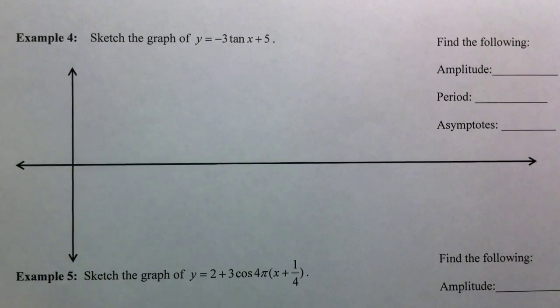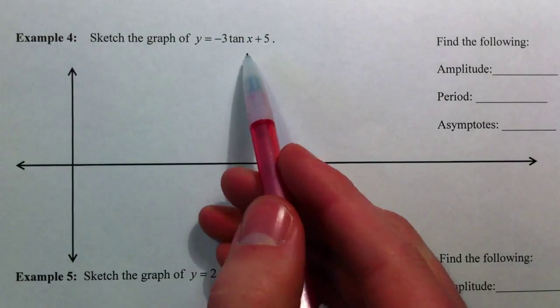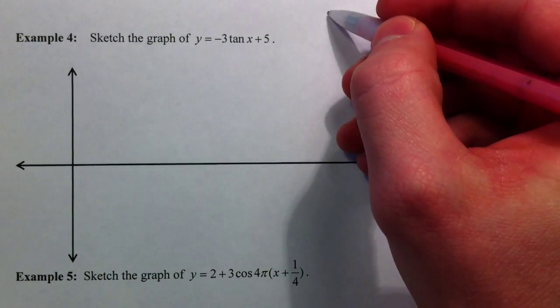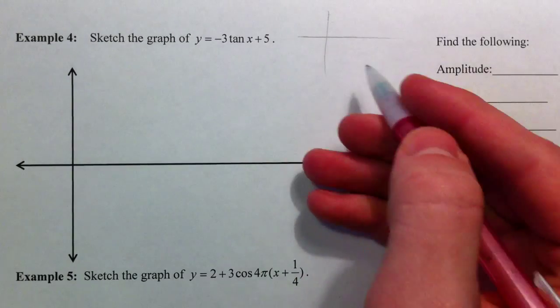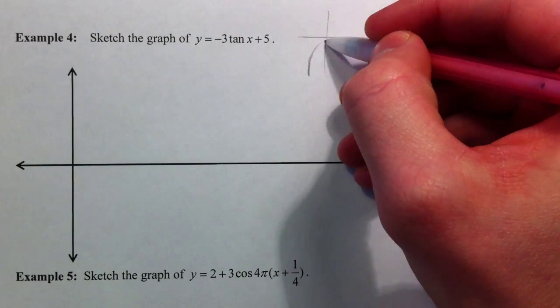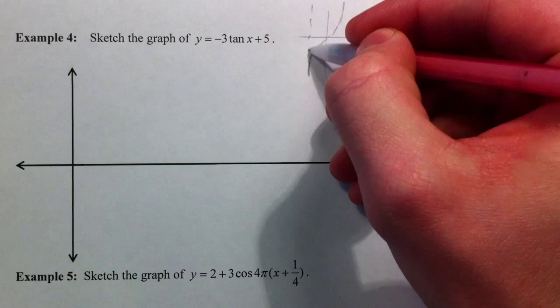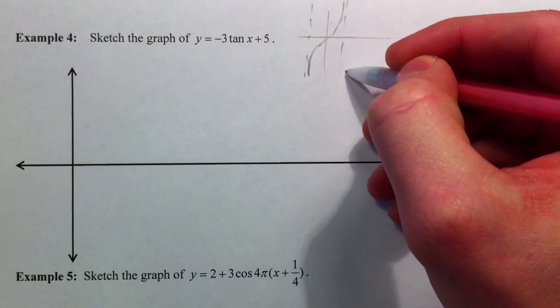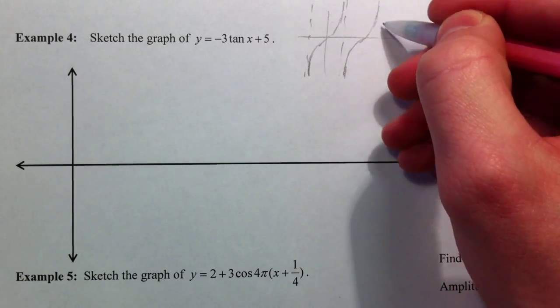All right, on to a few more examples. We're going to sketch a tangent graph. And what I want to remember is the basic tangent graph looks like this, where it has asymptotes. And so I'm trying to remember that.